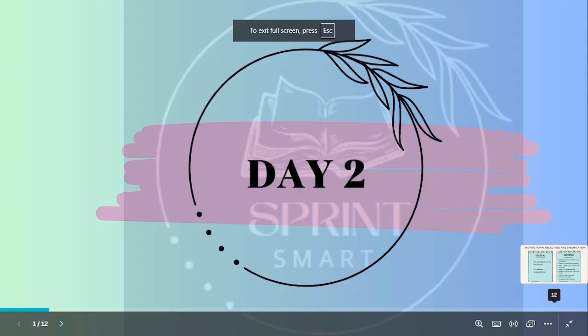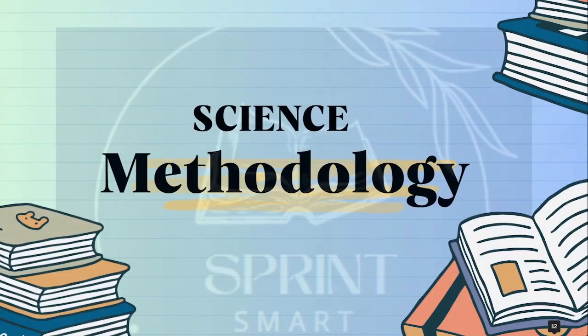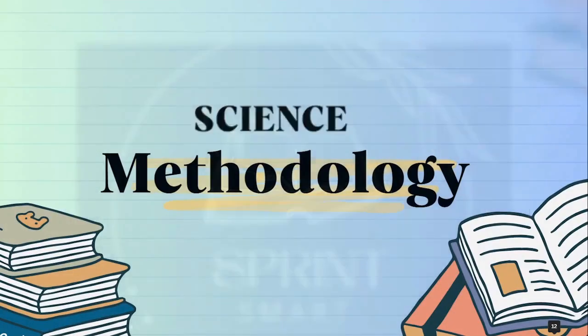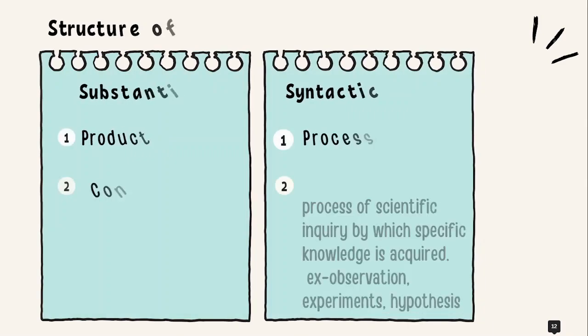Welcome to Smart Sprint. Today is day two of our 21-day challenge. In this video, we are going to discuss the next topic of science methodology — that is, the structure of science. The structure of science is basically of two types: substantive and syntactic.